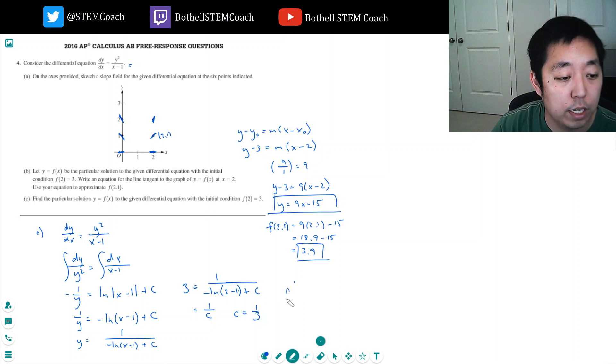So my final answer is f(x) or y is equal to 1 over 1 third minus natural log x minus 1.